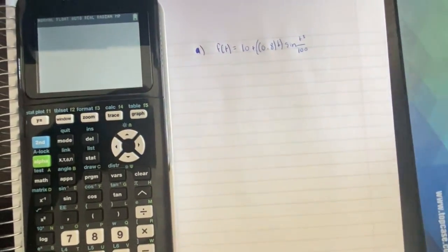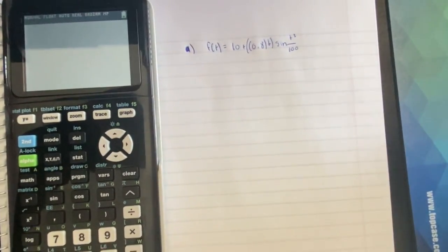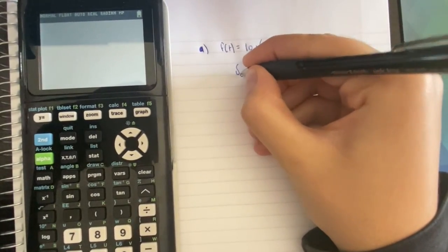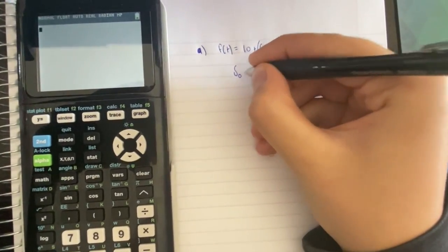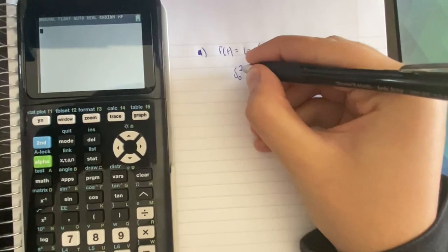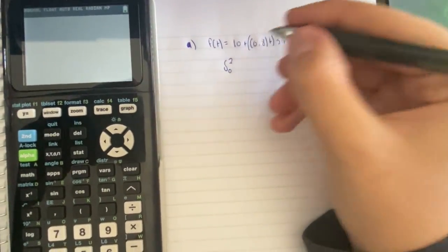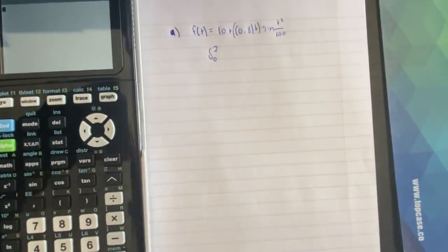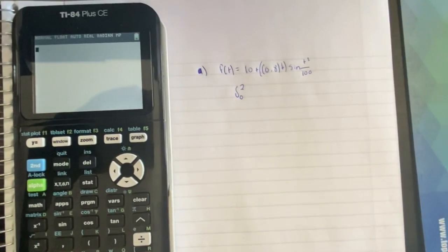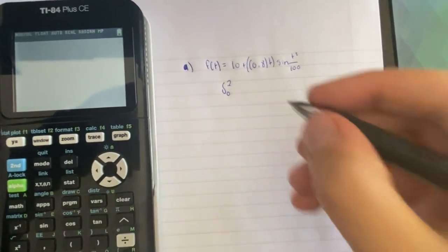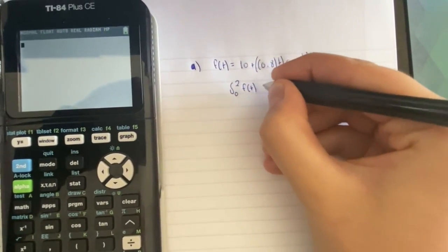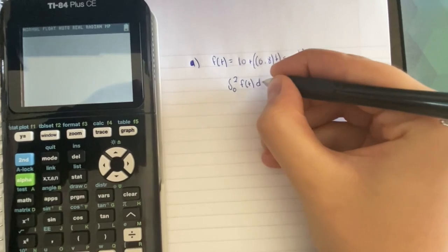It's asking us during the first two hours the store is open. That means we have to use the integral from zero — because that's the initial amount — to two, which is two hours after the store is opened. And we're finding bananas removed, so we use F of t dt.